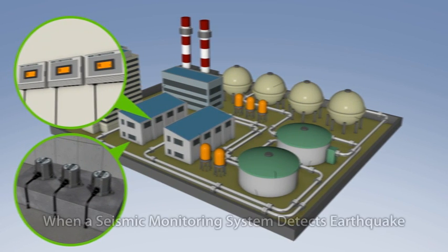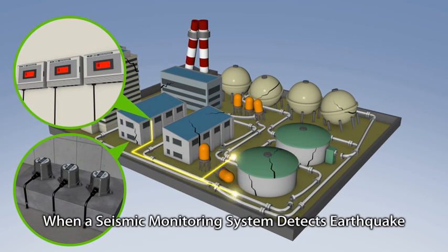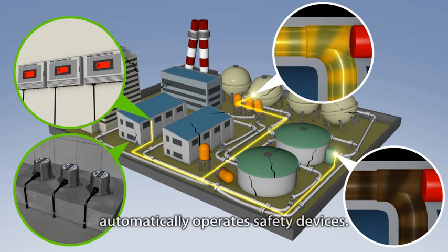Particularly at plants, seismic monitoring systems can activate various controls via automatically generated signals to prevent secondary disasters.